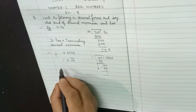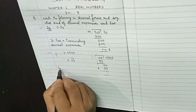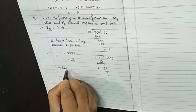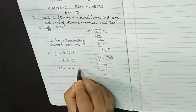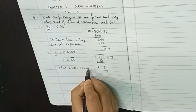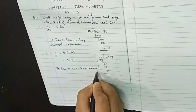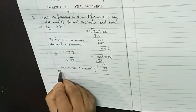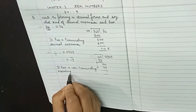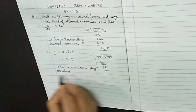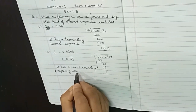This type of decimal expansion is known as non-terminating repeating, because 09 is repeating. So it has a non-terminating and repeating decimal expansion.